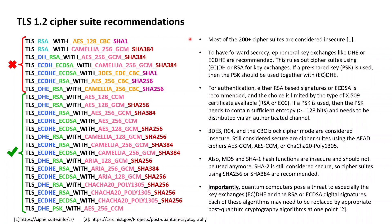Starting with the key exchanges, we know that key exchanges should preferably provide forward secrecy. Forward secrecy is provided by the ephemeral Diffie-Hellman key exchange DHE or the ephemeral elliptic curve Diffie-Hellman key exchange ECDHE. This rules out cipher suites not providing forward secrecy, which is the case for cipher suites conducting key exchanges based on RSA encryption or the static Diffie-Hellman key exchange DH or ECDH.